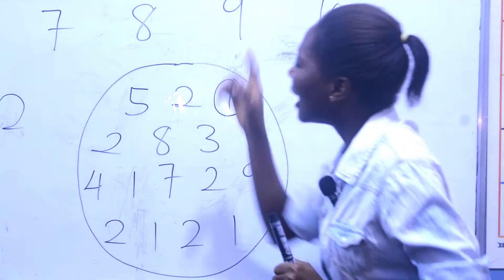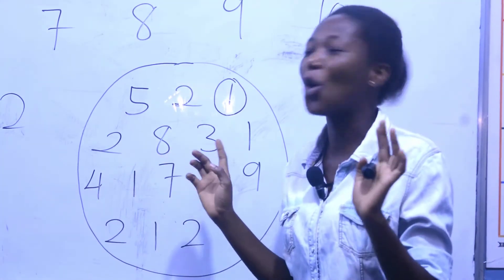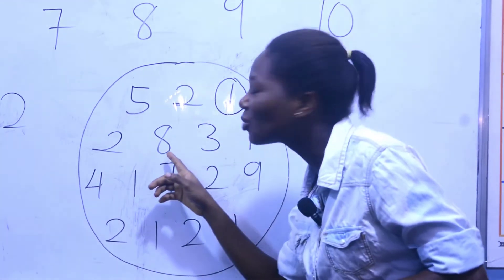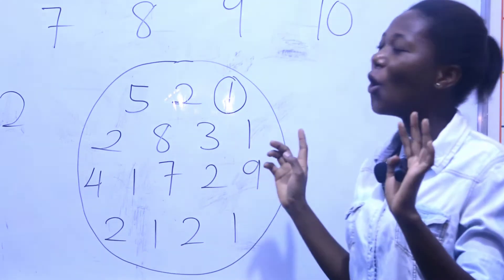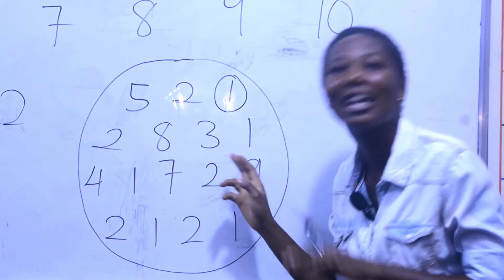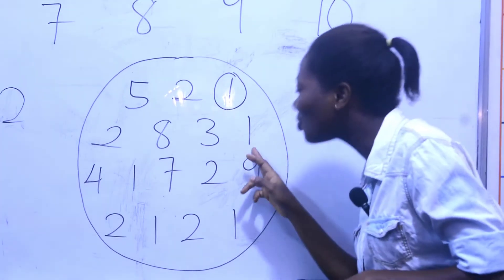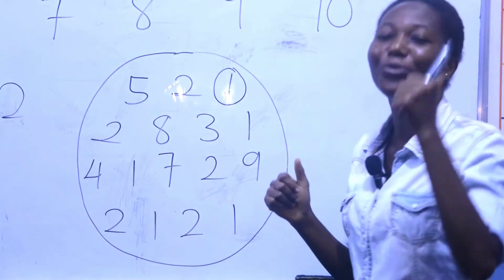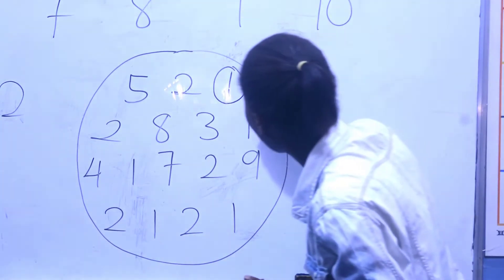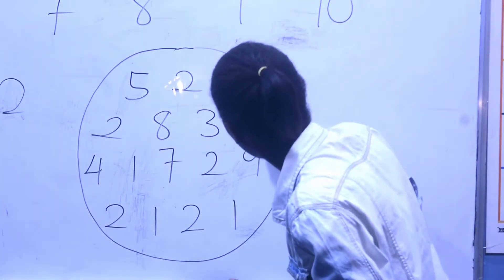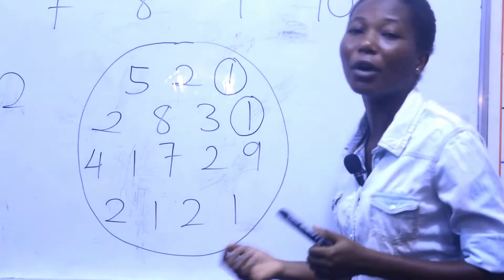Now let's go again. Is this one? No. Is this one? No. Is this one? No. Is this one? No. Is this one? Yes — very good! Now you circle your one. Very good. Now let's move on.